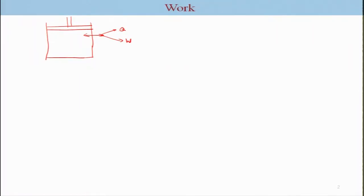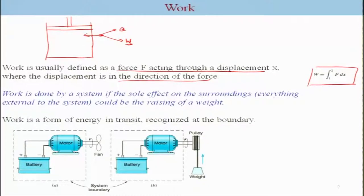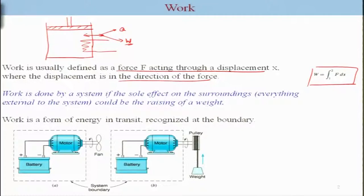The work can be of different types. The classical definition defines work as a force acting through a displacement where the displacement is in the direction of the force, and we typically write work in this form. A generic definition is that work is done by a system if the sole effect on the surrounding could be the raising of a weight.